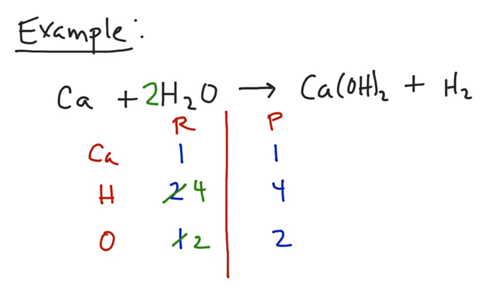So if you look through this equation, we can look at our little chart we've made, and see that now everything is balanced. 1 calcium on both sides, 4 hydrogen atoms within those compounds and molecules, and 2 oxygen atoms within those compounds and molecules. So that's our example.